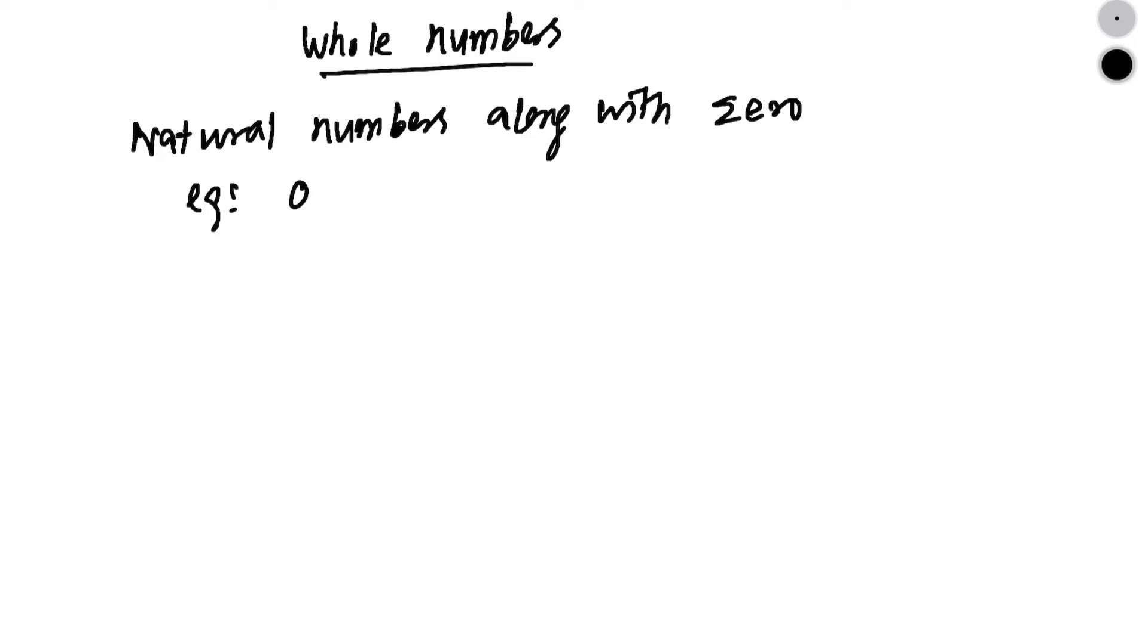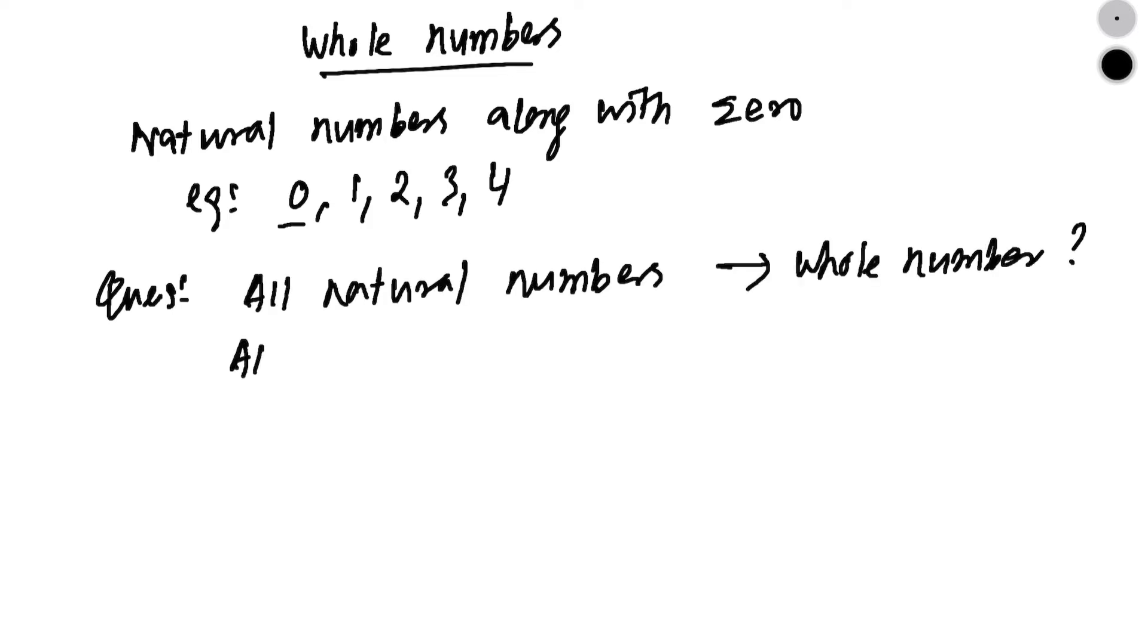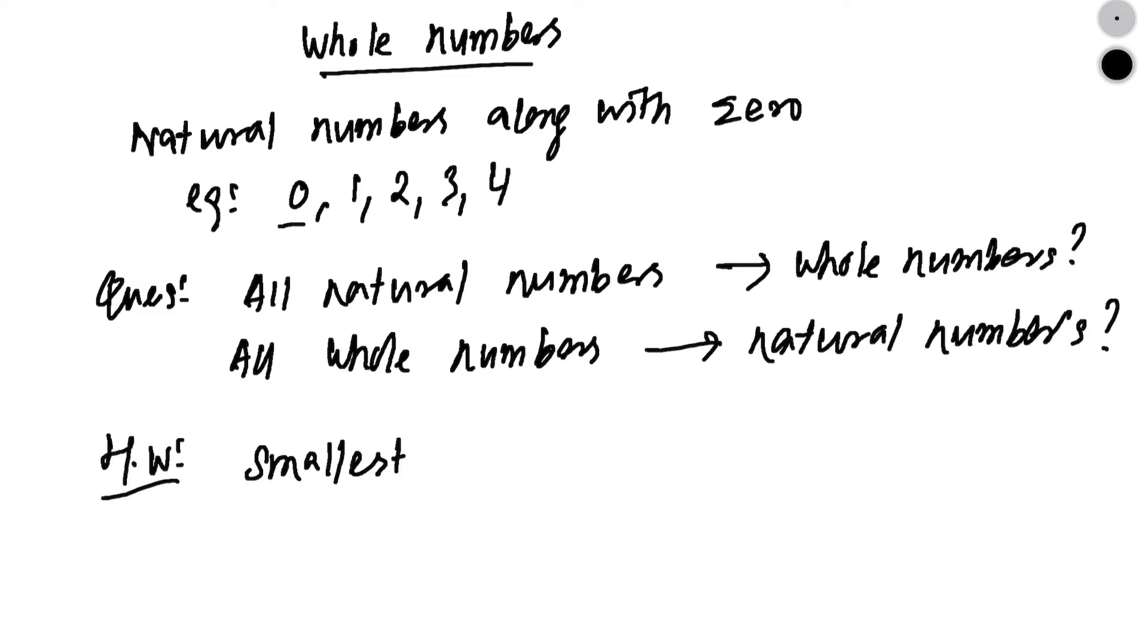So when you count a natural number, you will count from 0, 1, 2, 3, 4 and so on. Question, are all natural numbers whole numbers? And are all whole numbers natural numbers? And for homework, write the smallest whole number and the smallest natural number.